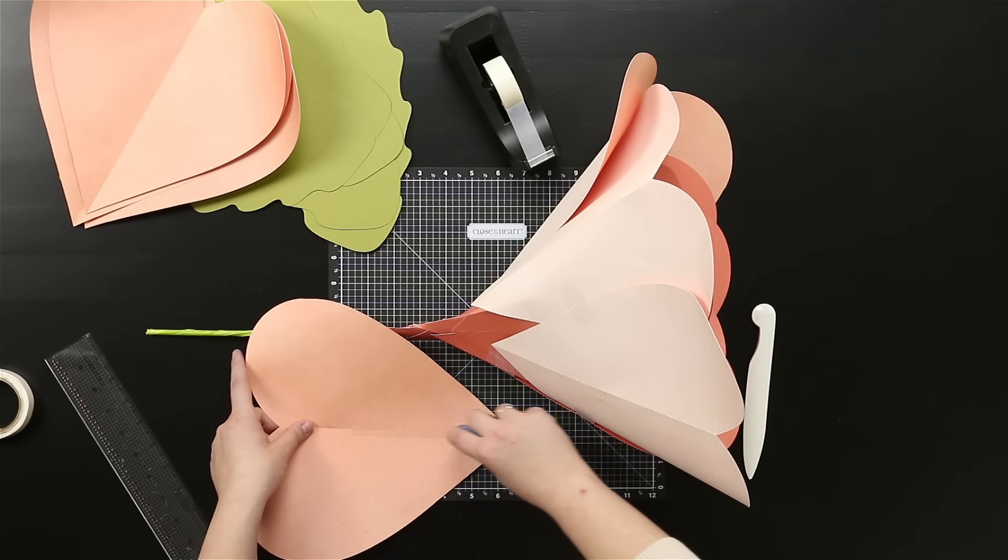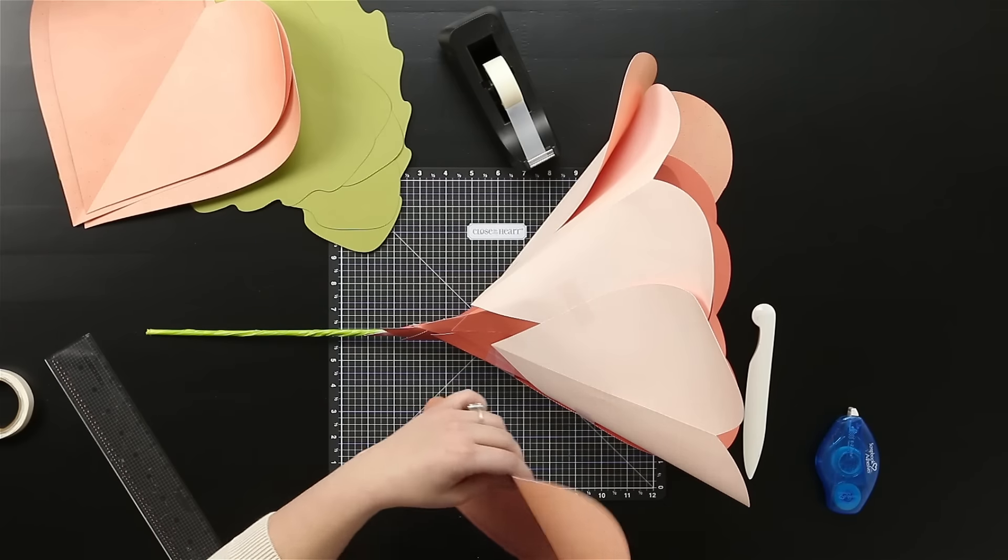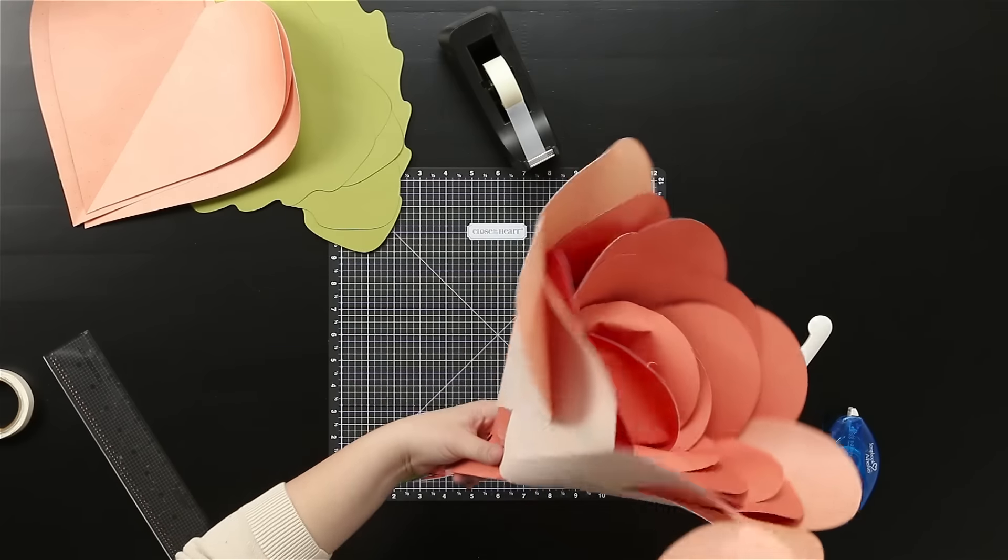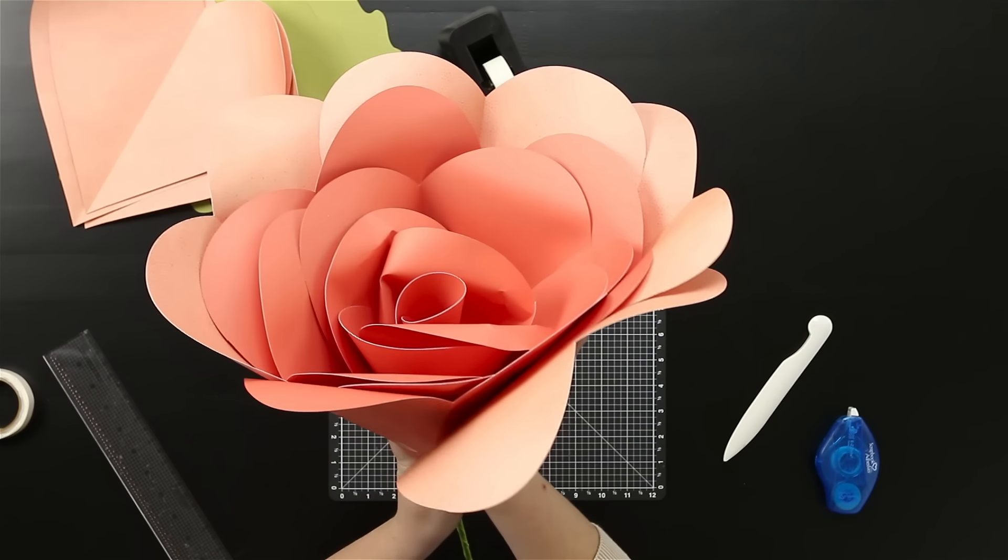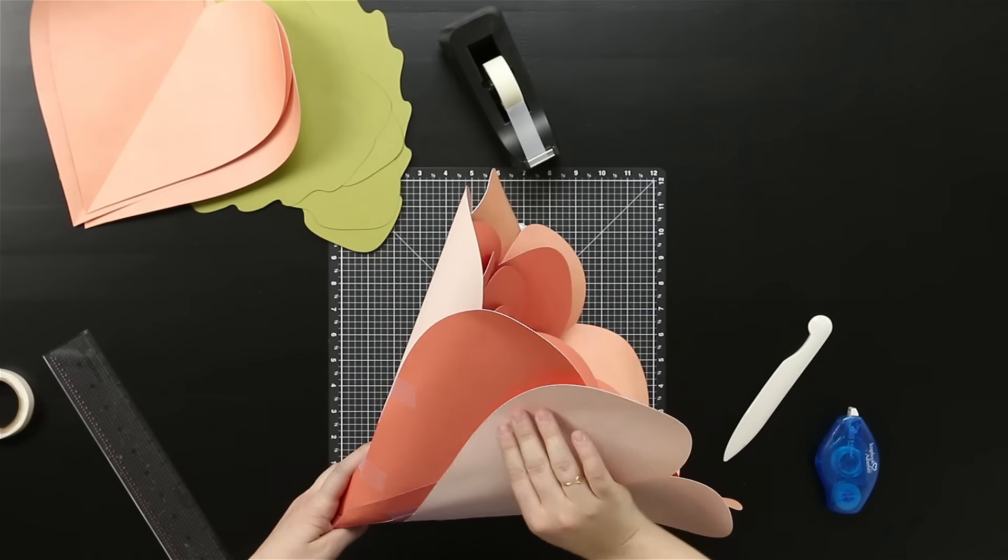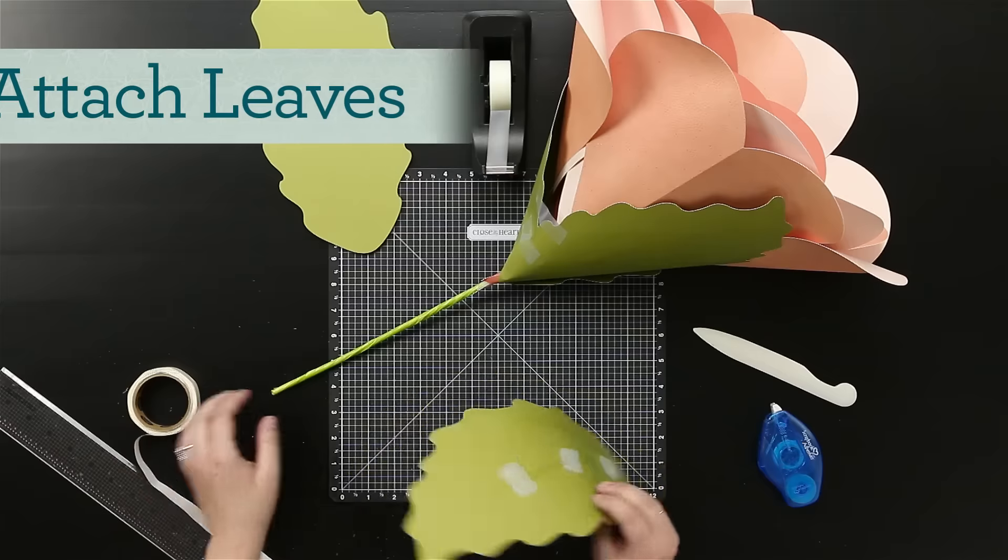So here we've got the adhesive down the center, around the sides, and then we're getting ready to be near the end. Look how this is all coming together. So easy to put together. So just kind of bend it over, make sure that they're covering each other up that way.